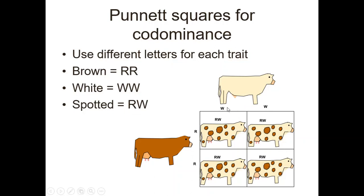So the spotted cow — look at this — we pull over one R and a W, so it's an RW. They're both going to show in the offspring, and they are co-dominant. So what percentage of these cows are going to have an R and a W in their genotype? A hundred percent, all of them. What percentage of the offspring will be spotted? One hundred percent.